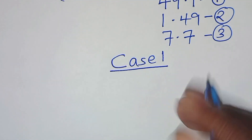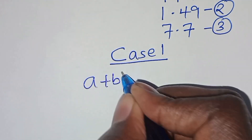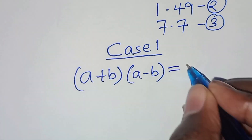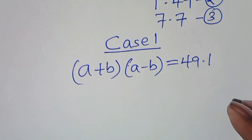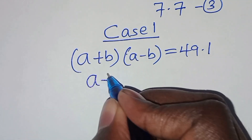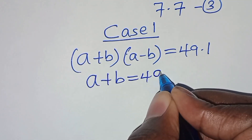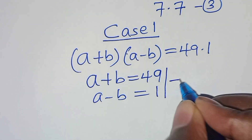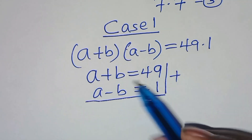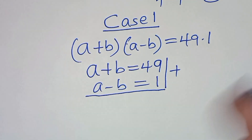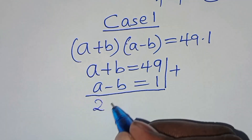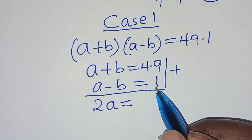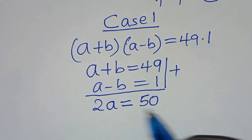Case 1: (a + b)(a − b) = 49 × 1. This implies a + b = 49 and a − b = 1. These are two simultaneous equations. Adding them together: a + a gives 2a, and b minus b simplifies, giving 49 + 1 = 50.